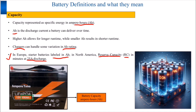Understanding battery capacity and its implications can be beneficial in various applications. Here you can see a lead-acid battery. In this particular battery pack, Ah is written in the European standard — it shows 100 Ah, indicating the battery capacity in ampere-hours.